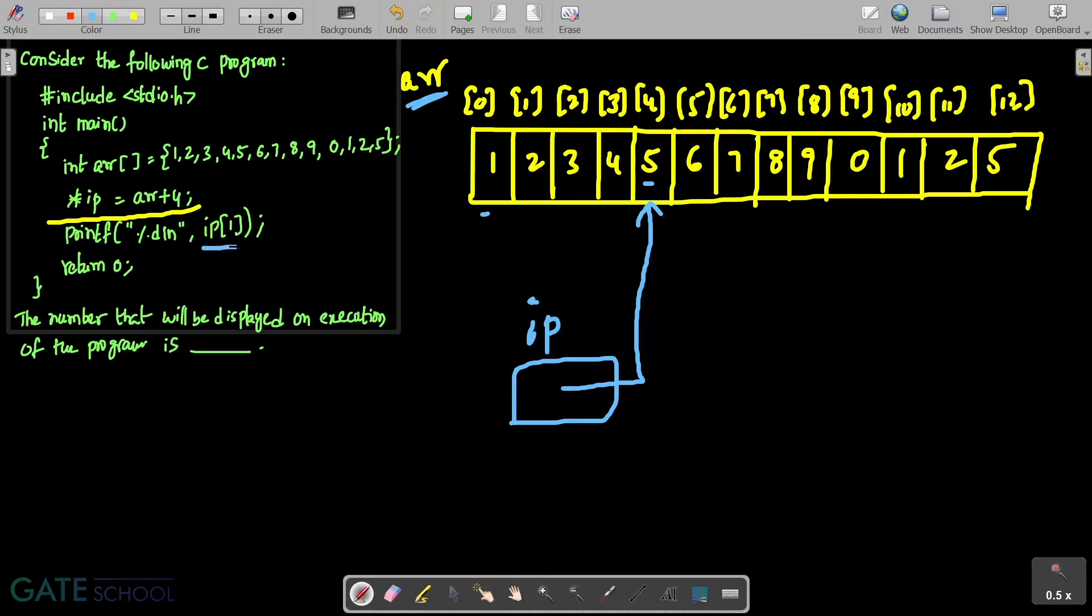Now, we are trying to print IP[1]. IP is a pointer which is pointing to this memory location. Star IP will be representing 5, because that is the value.